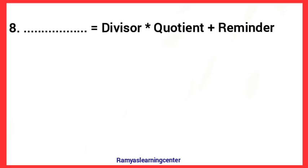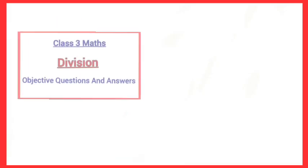Next one — Dash is equal to divisor into quotient plus remainder. Answer: Dividend is equal to divisor into quotient plus remainder. Thank you for watching.